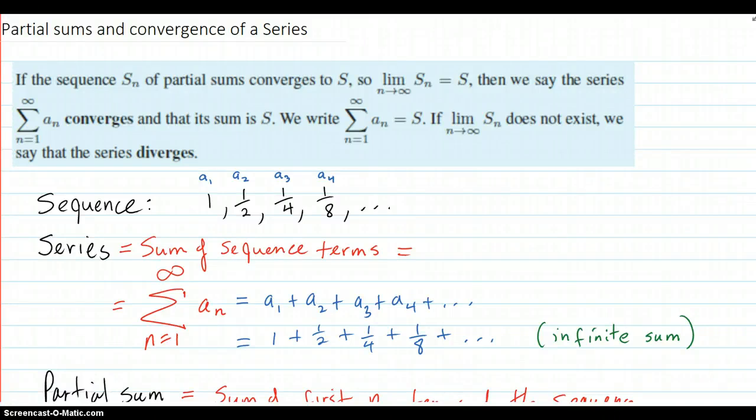Partial sums and convergence of a series. You can read this part right here. The partial sums are capital S sub n, and we'll talk about what those are. And if they limit out to a number capital S, so that as n goes to infinity, the partial sums converge to S, then the series converges and it converges to that S.